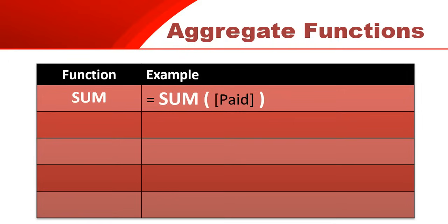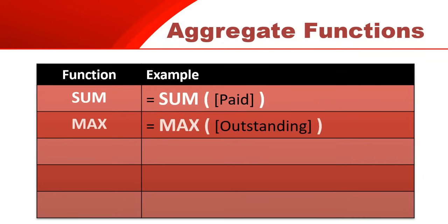It's very similar to Excel, except instead of cell references like A1 to A10, you just write the name of the field. You'll notice the field name is in square brackets — that's the required format. If you do not have spaces in your field names, you can write them as-is and Access will put the square brackets in for you. But if you have spaces, use square brackets.